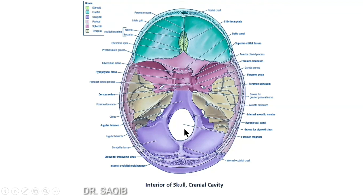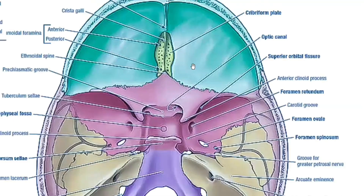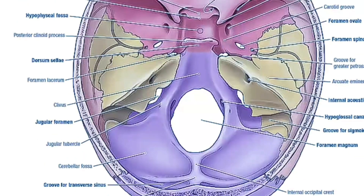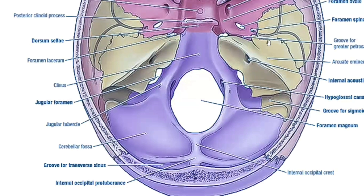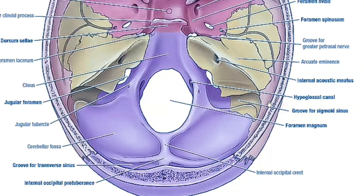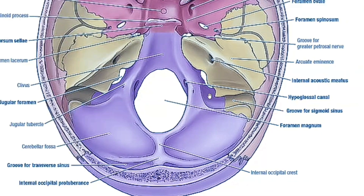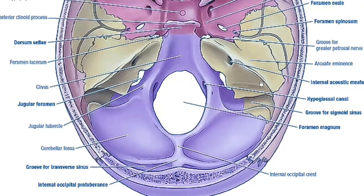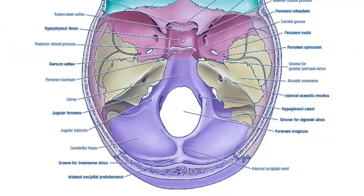You can see the foramen magnum in the posterior cranial fossa. Zooming in, you can see the jugular tubercle, the groove for the transverse sinus, and the groove for the sigmoid sinus, which is the continuation forming the internal jugular vein. The internal acoustic meatus is in the petrous part of the temporal bone — the thickest and strongest bone of the body — and the petrous temporal nerves pass through it.